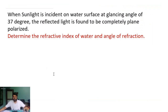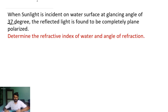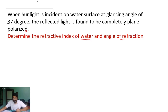Let us solve these numerical problems. The first question is: when sunlight is incident on a water surface at a glancing angle of 37 degrees, the reflected light is found to be completely plane polarized. Determine the refractive index of the water and the angle of refraction. We use Brewster's law.